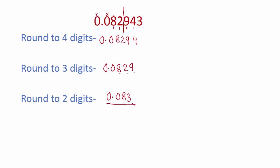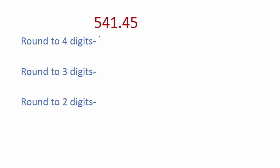Here is the next example. We have to round to four significant digits — one, two, three, four — that means up to here. The next digit is five, so we need to turn this four to five; we increase this number by one. So this four becomes five. The others are as they are. Keep in mind we will not turn this five to zero here because after the decimal we just drop the digit, we don't turn it to zero.